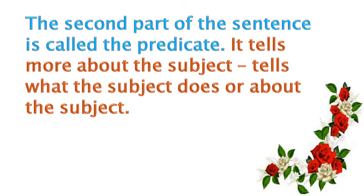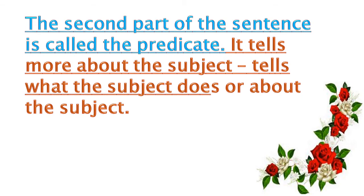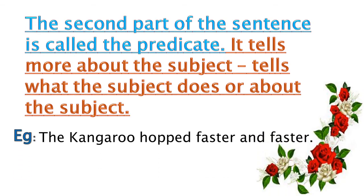The second part of the sentence is called the predicate. It tells more about the subject — it tells what the subject does or about the subject. See the example: 'The kangaroo hopped faster and faster.' Here, 'hopped faster and faster' is the second part.